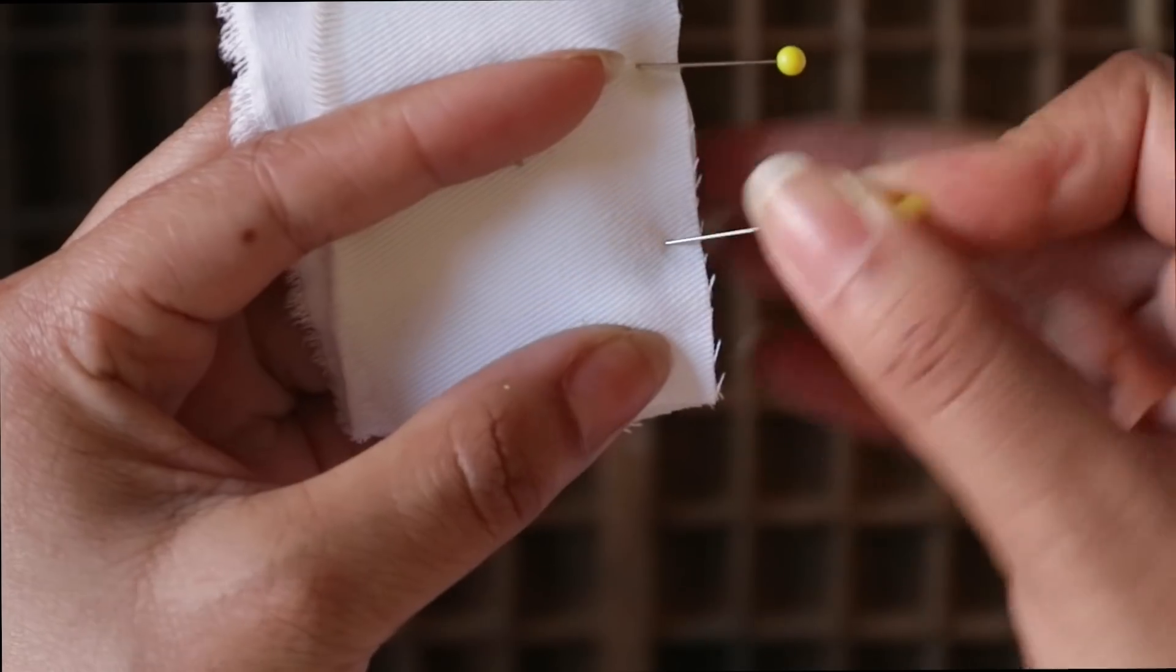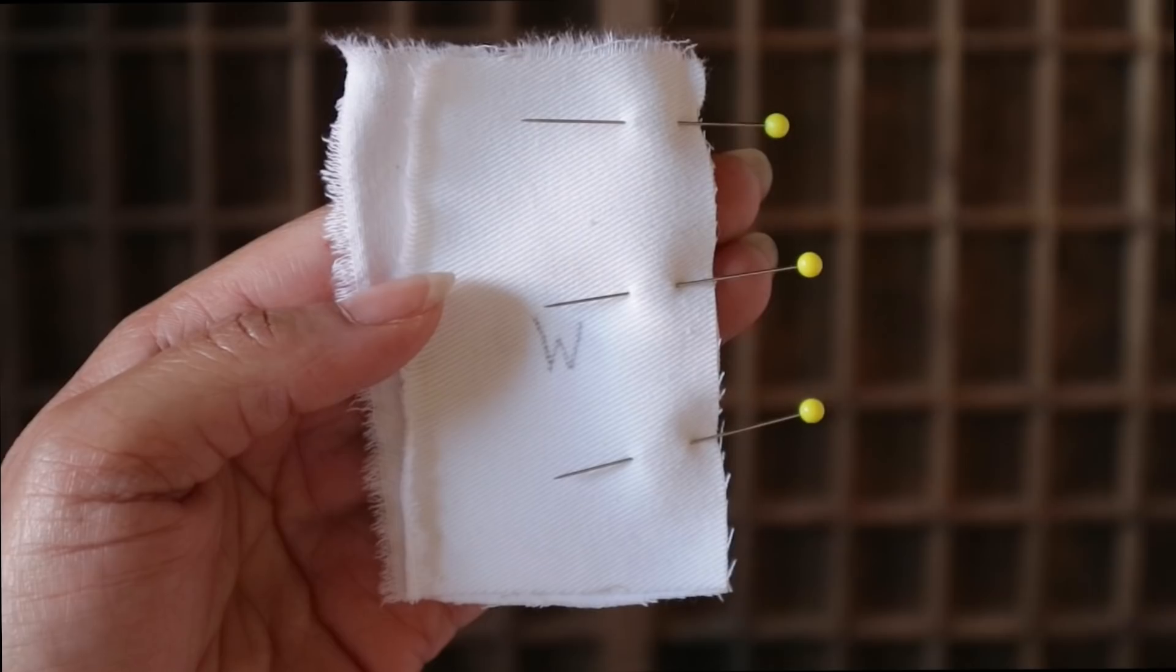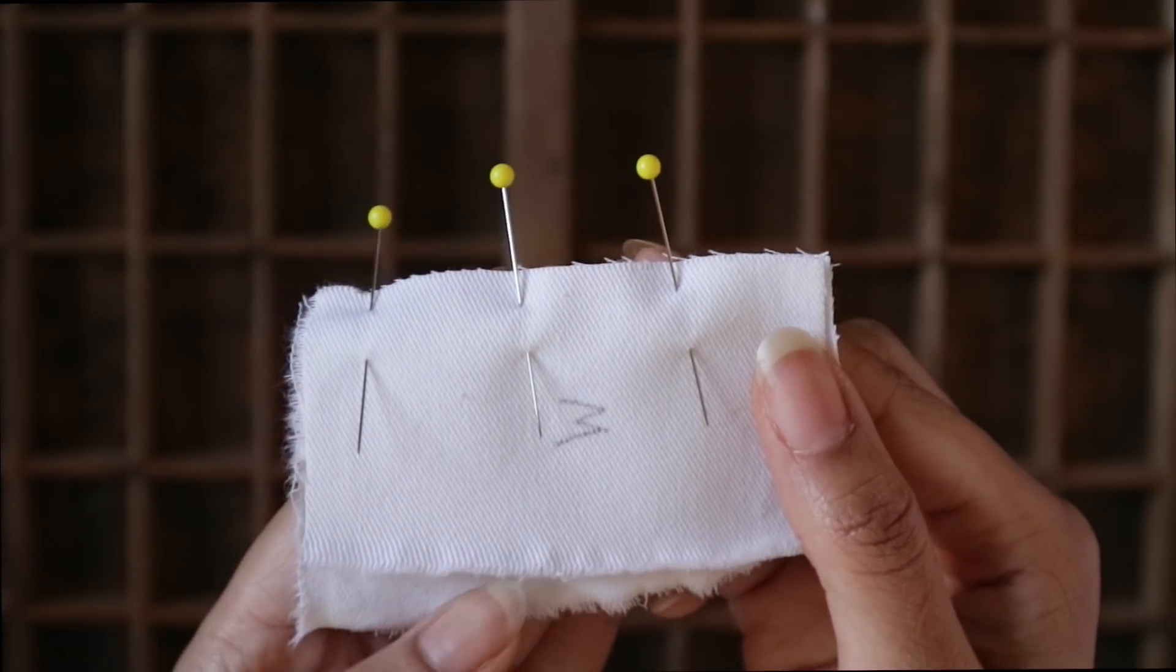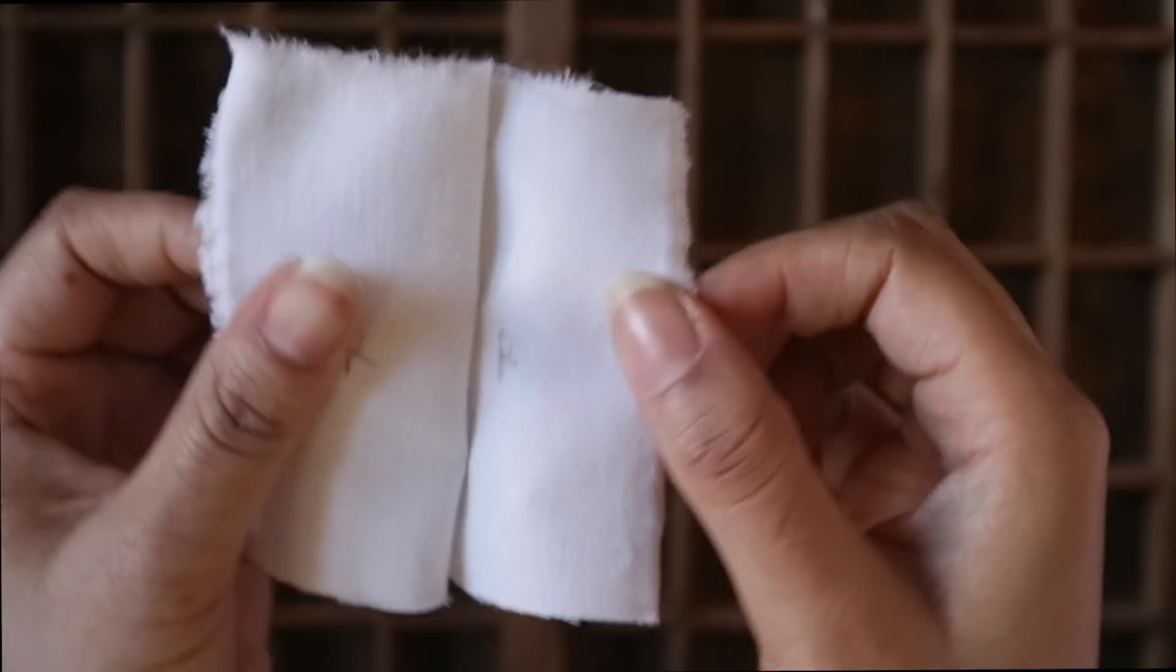So place them perpendicular to your raw edge, spaced evenly apart. You may not need many pins. Point is just to hold your fabric securely enough that it doesn't budge where you need it the most. In case you're not quite sure if you've put your pattern pieces together the right way, to check all you have to do is open your fabric.